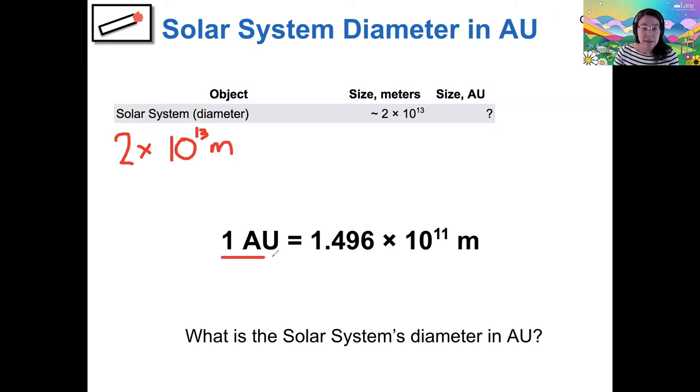So instead of leaving this factor as 1 AU is equal to this many meters, instead, I'm going to say, well, it's true that if I divide both sides by 1.496 times 10 to the 11 meters, then it's going to cancel out of this side and leave me with a factor of 1 AU divided by 1.496 times 10 to the 11 meters on both sides. So I'm going to pause my recording and try to catch up real quick on writing that down.